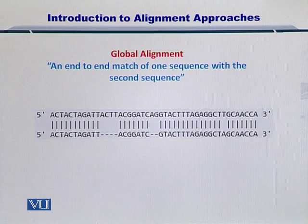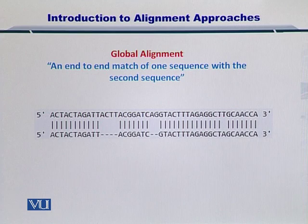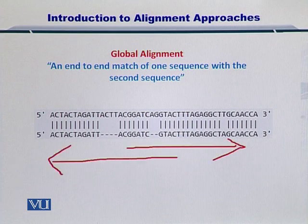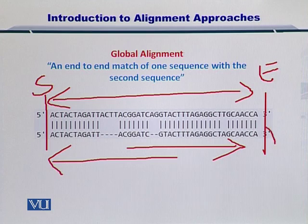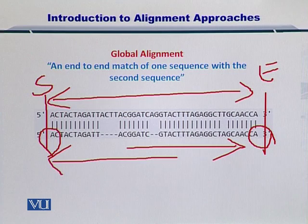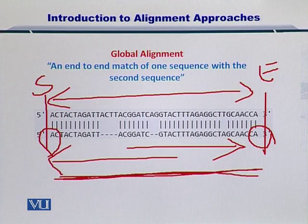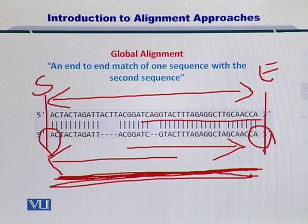Now, global alignment. As you just saw, in local alignment I was searching for the smaller sequence within the bigger sequence. In global alignment, what I have done is stretched the shorter sequence until a point where it spans the start and end of the longer sequence. This is the start and this is the end. If you consider the shorter sequence like a rubber band, I have stretched it to become equal in size to the longer sequence.